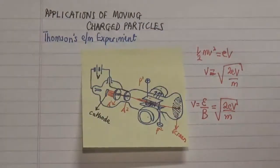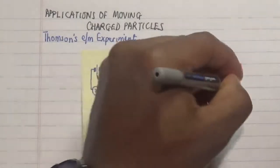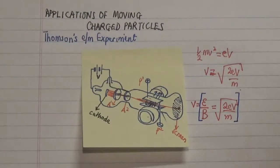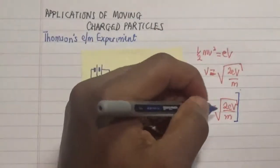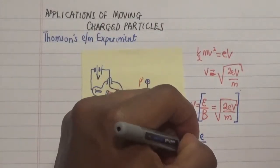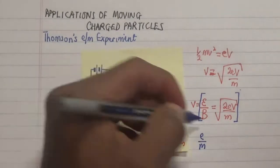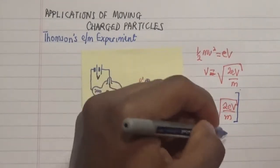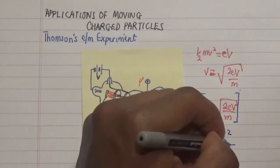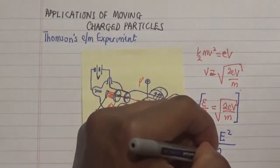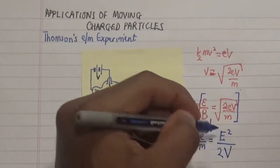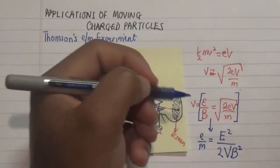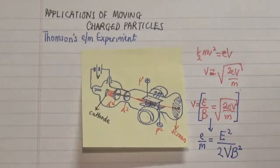Now our focus now is these two equations and we are going to play around with it to be able to solve for our electron per mass ratio. This is equal to e squared over 2 voltage multiplied by the magnetic field all squared.